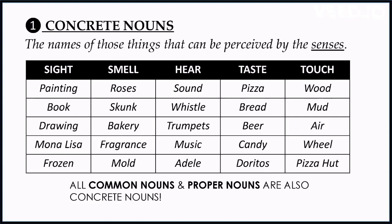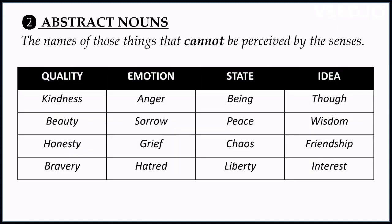Next up: abstract nouns. Abstract nouns are those which we cannot perceive by our senses. For example, qualities like kindness, beauty, honesty, and bravery — we can't sense them, we can only think or feel about them. Similarly, emotions like anger, sorrow, grief, and hatred are feelings we cannot physically perceive.